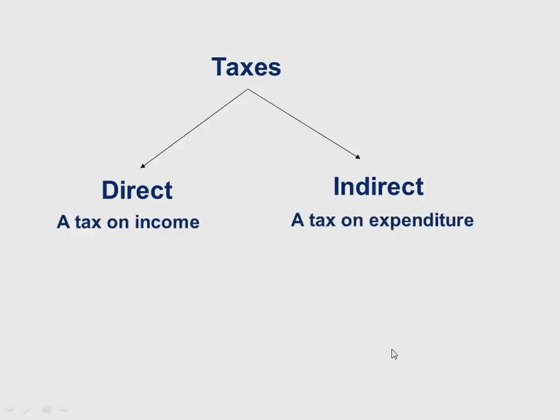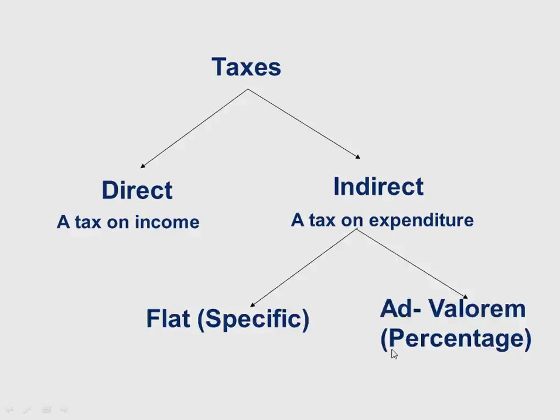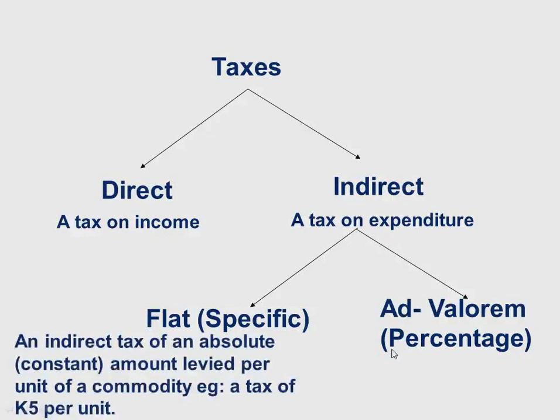Under indirect tax we have two types: the flat or specific tax, and the ad valorem tax. A specific tax is an indirect tax of an absolute amount levied per unit of a commodity. For example, you can levy a five-kwacha tax per unit — say per loaf of bread. So for each loaf you get, you pay five kwacha tax, and that is a fixed or flat tax.